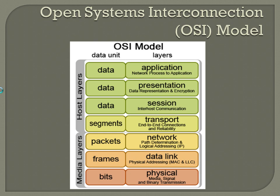On the left-hand side, you'll see the different data units listed — that's also something you'll need to memorize. Basically, anything in the top three layers is going to be data. When you go down to the bottom, you start with bits — physical, like surges in electricity, zeros and ones are bits. Groups of bits are put together into frames, and frames are put together into packets. Packets are put together into segments, and after that you're all data.